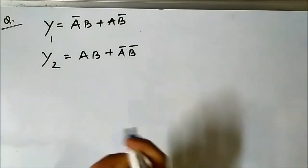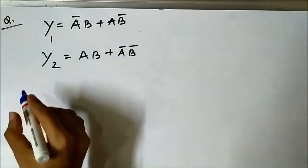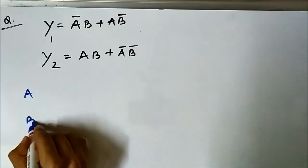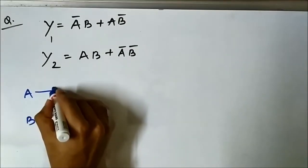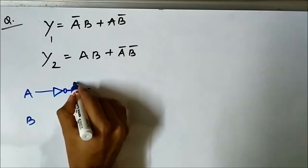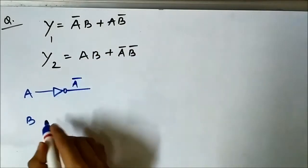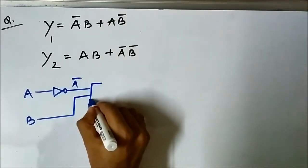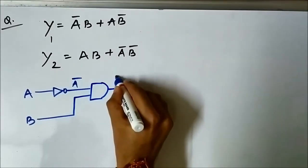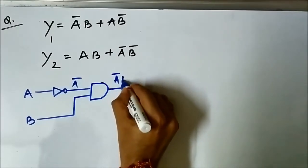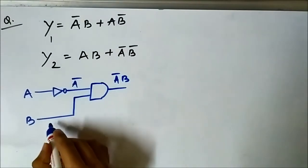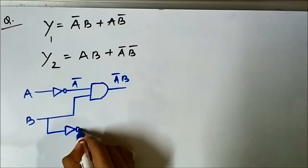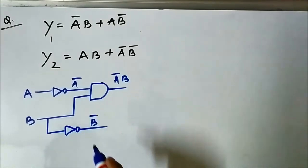Let us first get y1. We have two signal values, a and b. We have to first get ā, so we pass a through an inverter or NOT gate to get ā. Then we perform an AND operation to get ā·b. Next we need b̄, so we pass b through an inverter to get b̄.